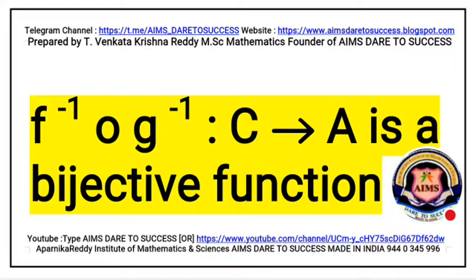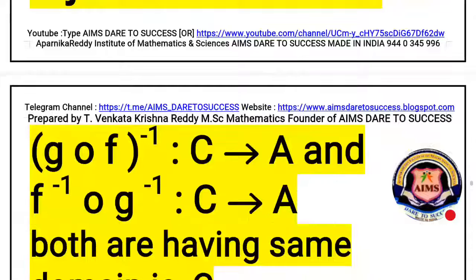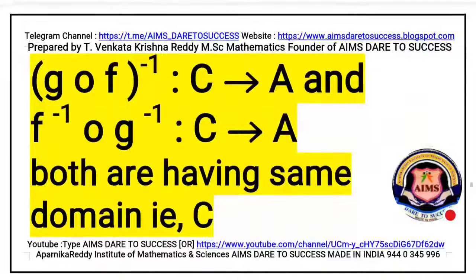My dear students, G inverse is a mapping from C to B, and F inverse is a mapping from B to A. The composite function of F inverse and G inverse — F inverse circle G inverse — is a mapping from C to A. That is why C to A is also a bijective function. So, G circle F whole inverse maps C to A, and F inverse circle G inverse also maps C to A. Both are having the same domain. Domain means the starting value, which is C.